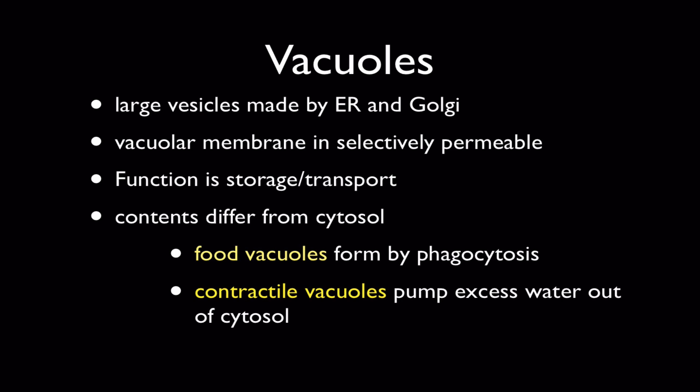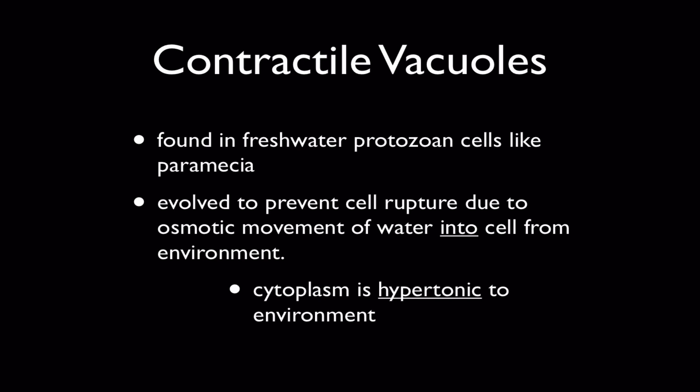Food vacuoles, as we saw previously, are formed by phagocytosis, and that's how intracellular digestion takes place. There is also a contractile vacuole, found in certain animal cells, whose job is to pump extra water out of the cytosol. Contractile vacuoles are primarily found in freshwater protozoan cells like paramecia, and they prevent the cell from swelling up and rupturing due to the osmotic movement of water into the cell from the environment.